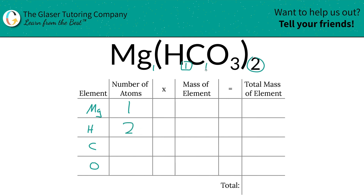Then carbon — same thing. You got a one, but you got to multiply by the outside, so it's two. And then oxygen, you multiply the inside by the outside, so there's six oxygen. Nice and easy.